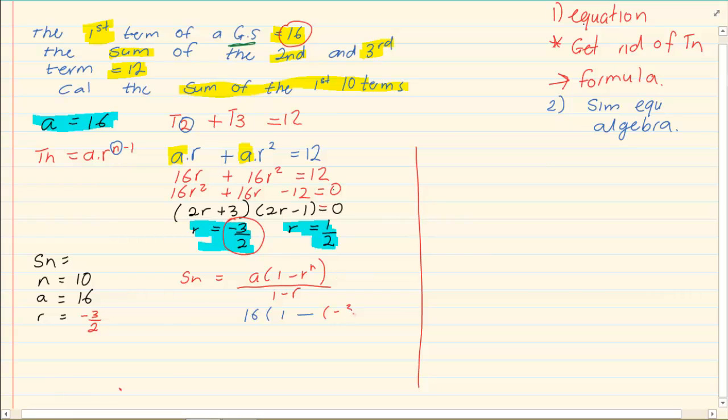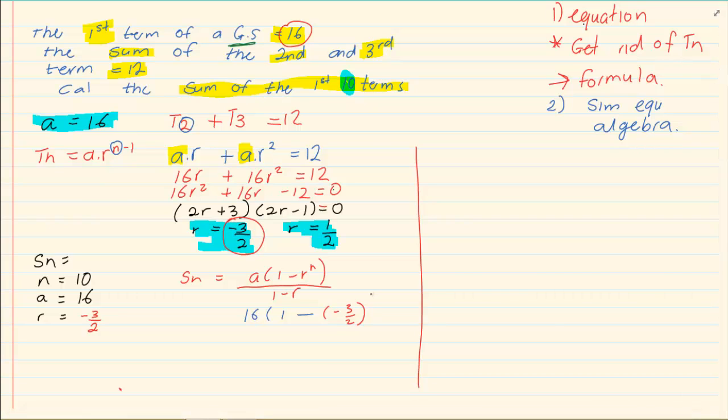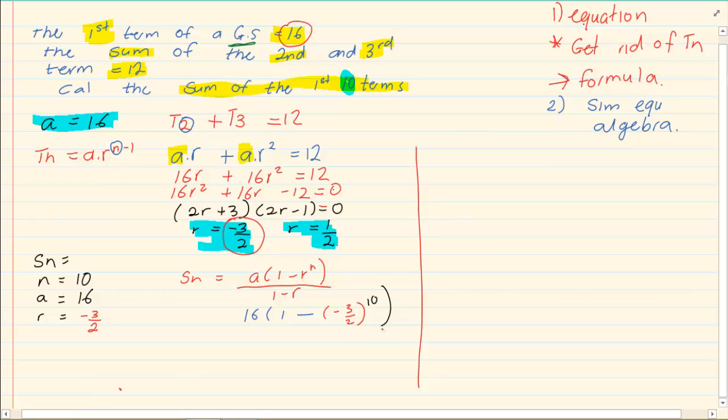So we have minus and then minus three over two to the power of 10, because they are asking us to calculate for the first 10 terms, to the power of 10, close brackets.